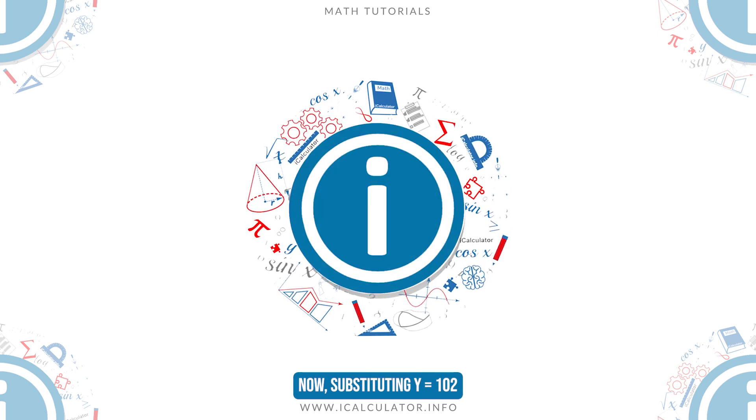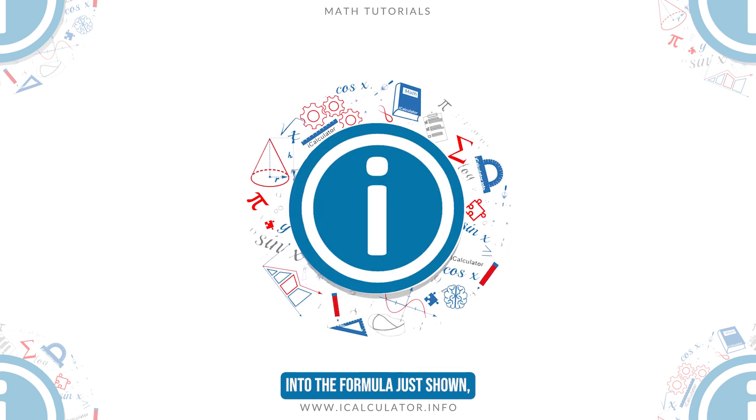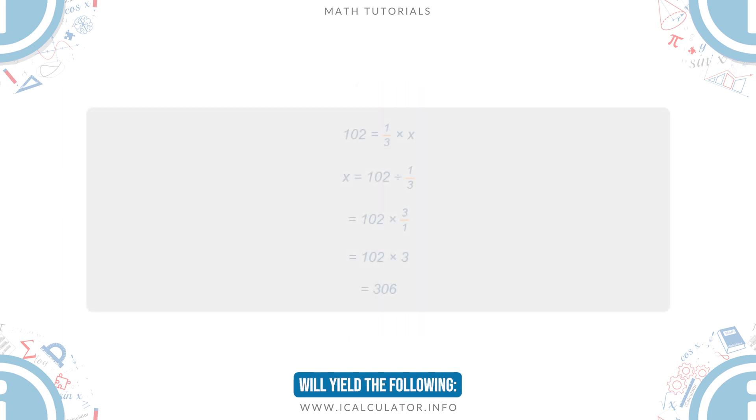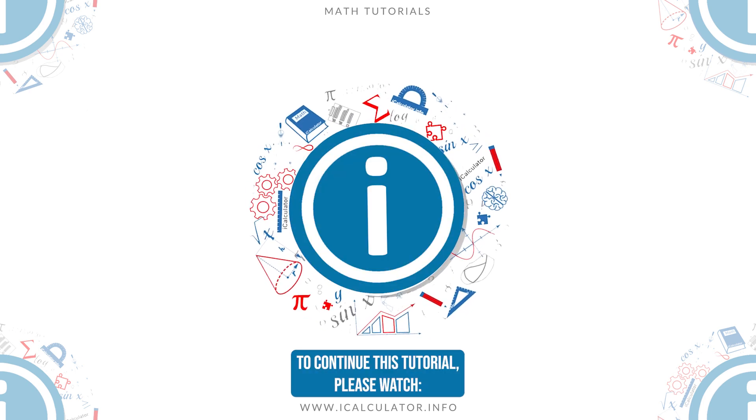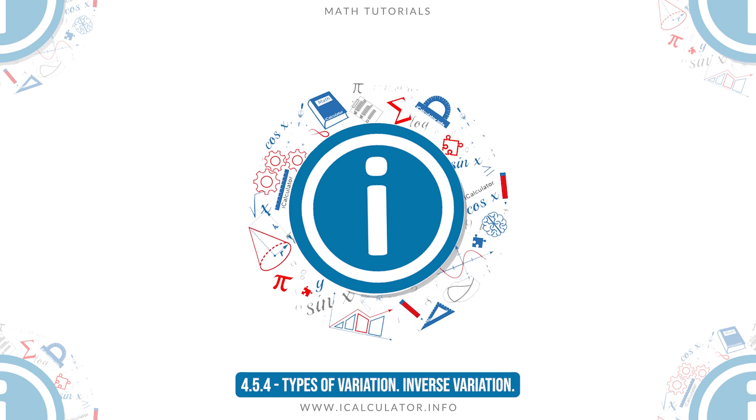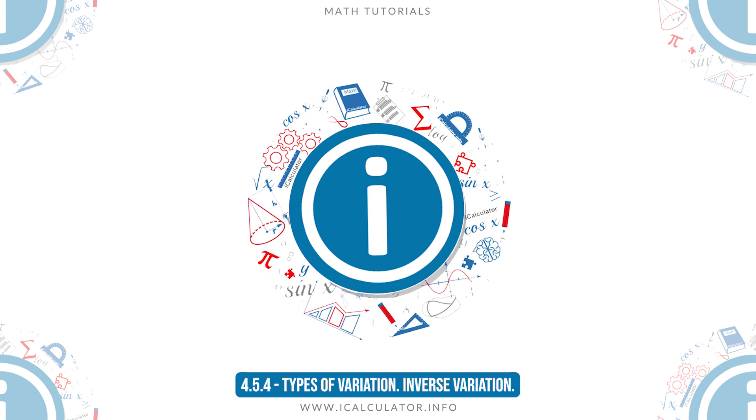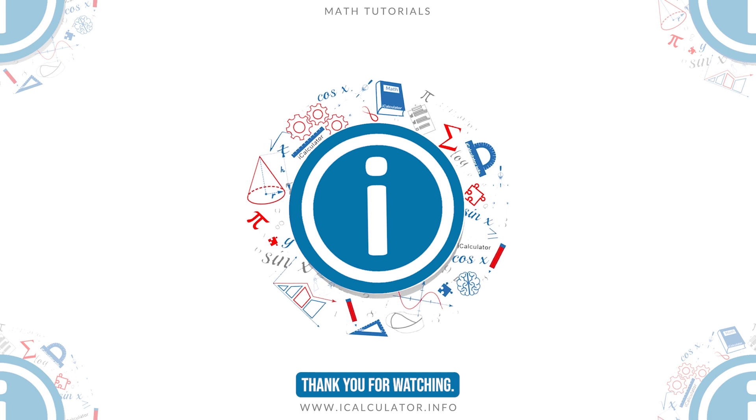Now, substituting Y equals 102 into the formula just shown, we yield the following. That is all for lesson 4.5.3. To continue this tutorial, please watch 4.5.4 types of variation inversion inverse variation.